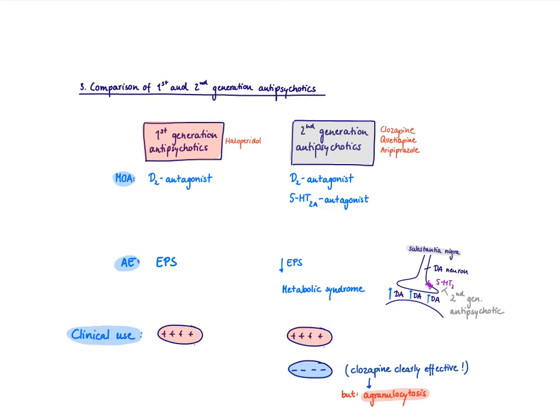Let's just wrap up the antipsychotics and make a comparison between first and second generation. So we said all of them are dopamine antagonists. The second generation are also 5-HT2A antagonists. They all can have extrapyramidal symptom side effects, which is predictable by the dopamine antagonism. But definitively, the second generation have less of them.